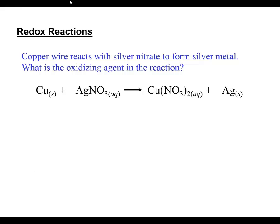Let's consider a simple redox reaction where we have copper metal placed in a solution that contains silver nitrate. What will happen is we end up with a redox process occurring because copper is higher in the metal activity series than the silver cation.